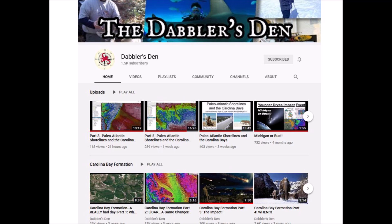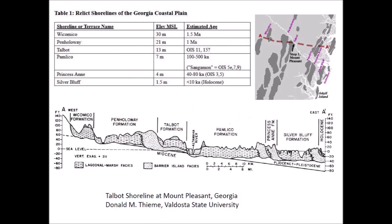Chris Cottrell has a YouTube channel called Dabler's Den that discusses the Carolina Bays. Some of his videos discuss the Atlantic shorelines and how they place constraints on the dates of emplacement of the bays. Chris examines previous shorelines of the Atlantic coastal plains studied by Professor Donald Thiem and tries to deduce the time of emplacement based on the geologic terraces where the bays are found. We will pay particular attention to the Pamlico Terrace, 7 meters above sea level with an estimated age of 100,000 to 500,000 years, and the Princess Anne Terrace, 4 meters above sea level, formed approximately 40,000 to 80,000 years ago.